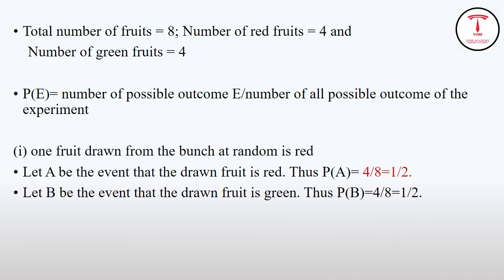Here, total number of fruits is 8, number of red fruits is 4, and number of green fruits is also 4. Probability of an event is number of possible outcomes of an event divided by number of all possible outcomes of the experiment. For this problem, total number of possible outcomes is 8. The question asks about one fruit drawn from the bunch at random being red. That is, red fruit is 4 divided by 8, which equals 1/2.